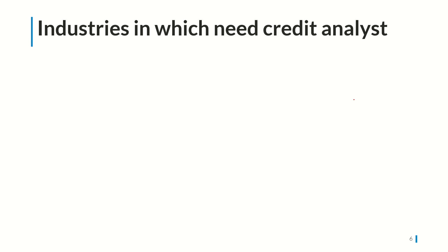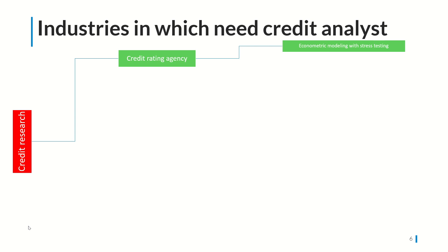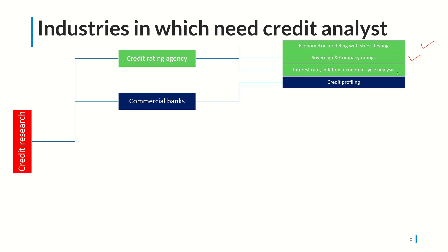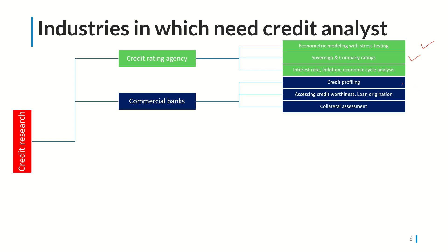Now let's talk about the industries where a credit analyst is needed. First, credit rating agencies need credit analysts to prepare econometric models with stress testing, do sovereign and company ratings, and track interest rate, inflation, and economic cycles to determine their impact on credit ratings. In commercial banks, the role involves credit profiling to assess whether a person is creditworthy enough for a loan, loan origination, collateral assessment of the security given against the loan, and monitoring whether loan covenants are being followed.